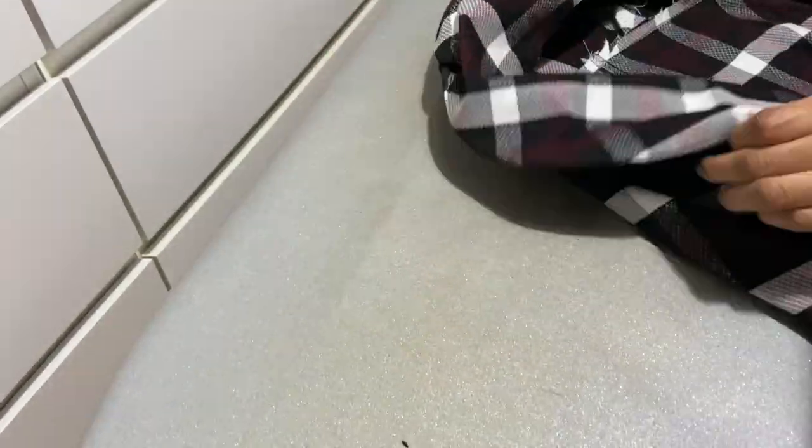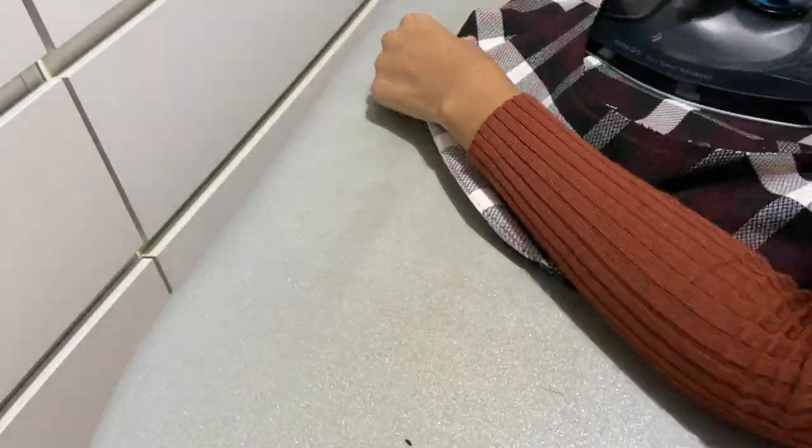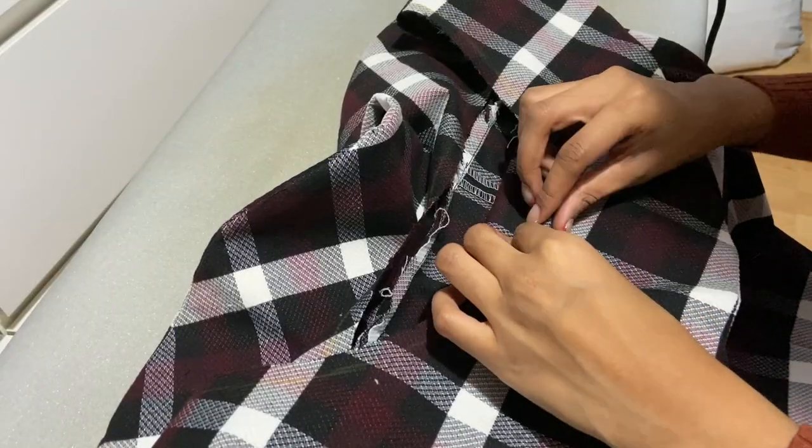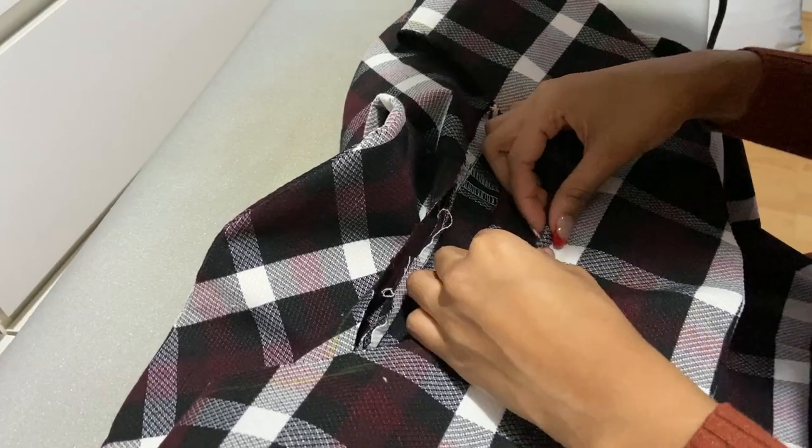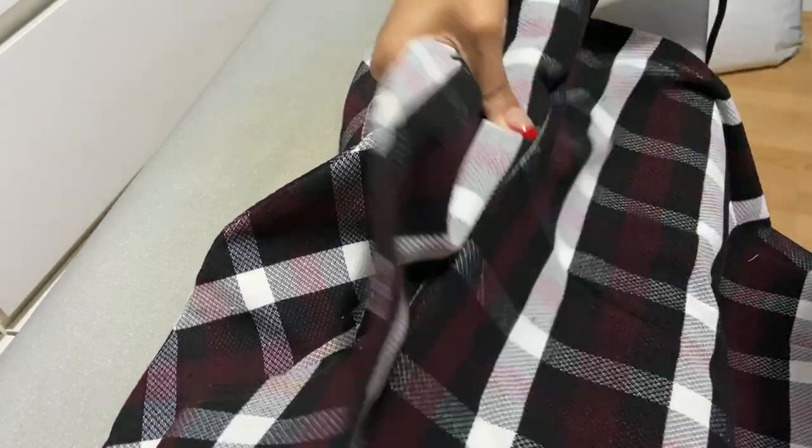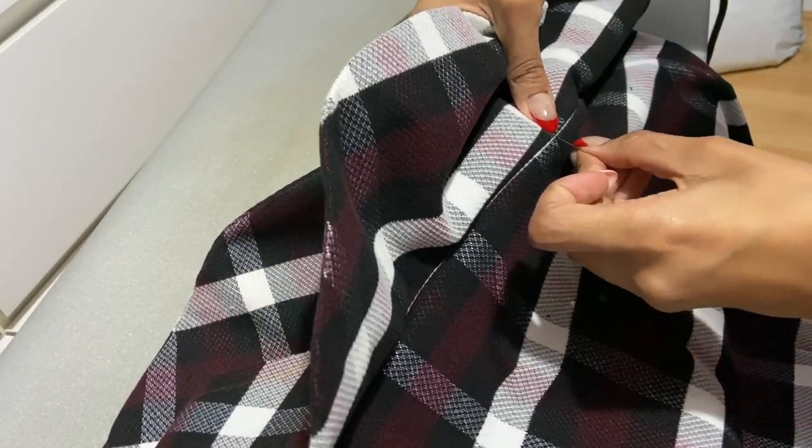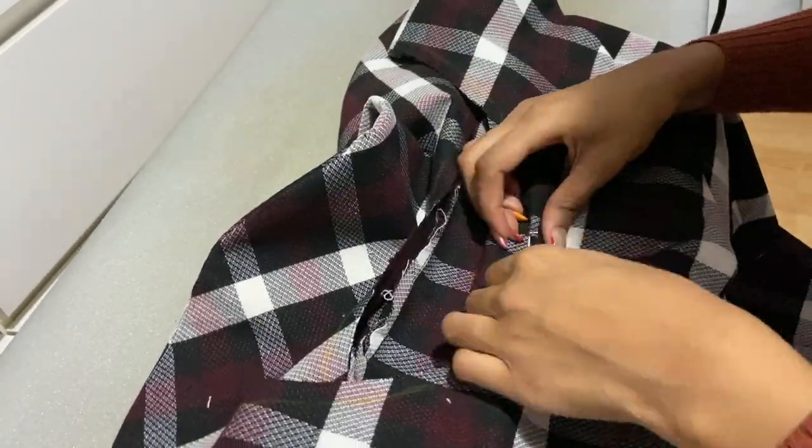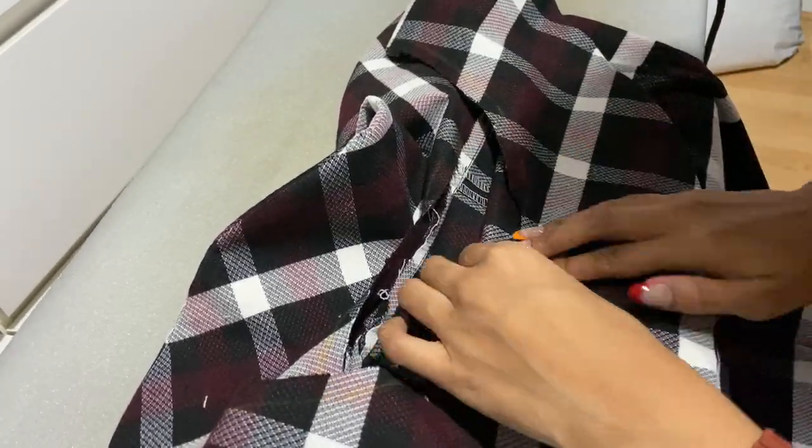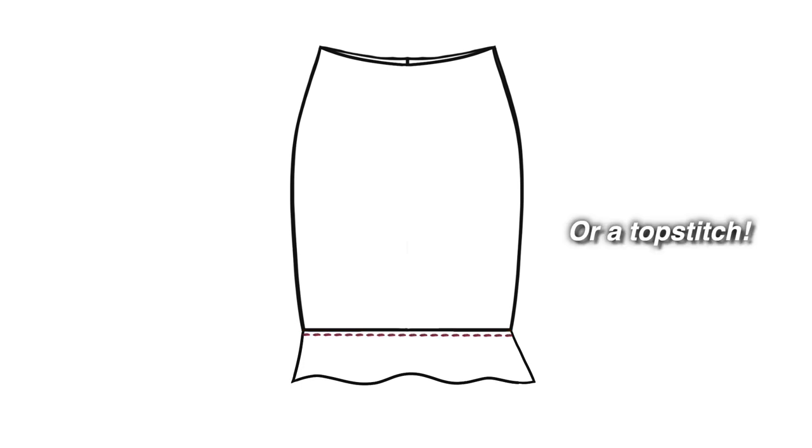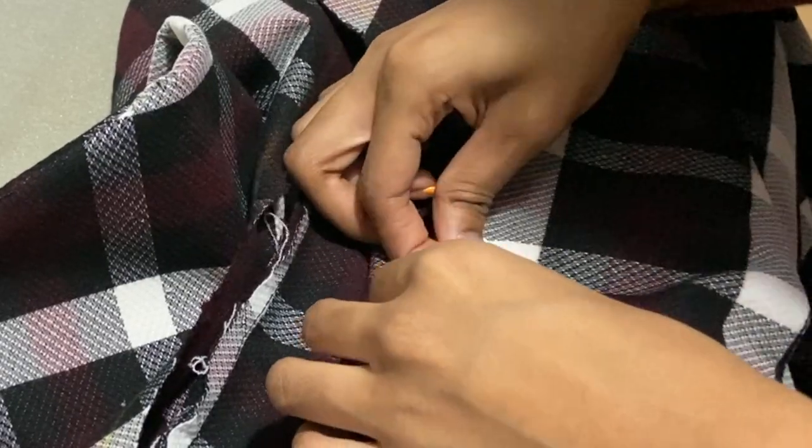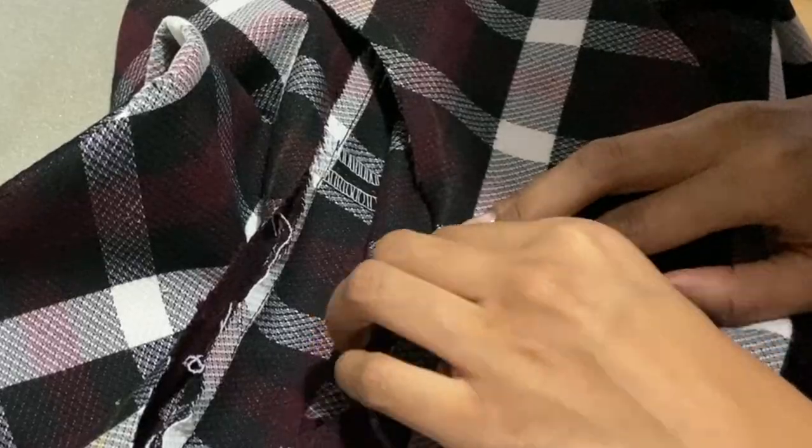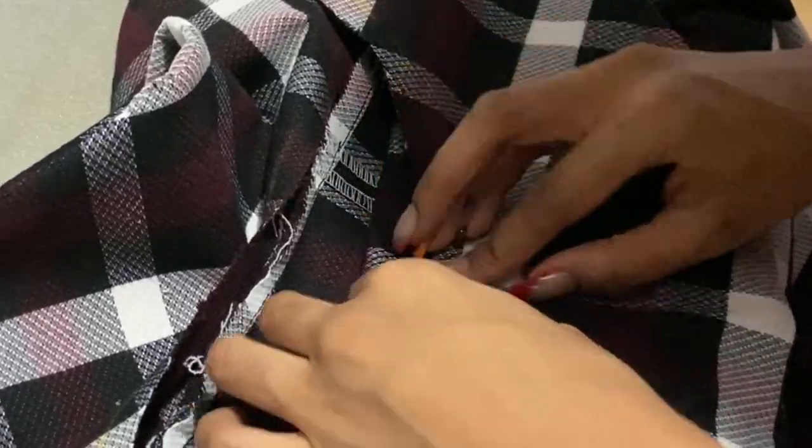Once that was done, I snipped the seam allowance to release the tension and press the seam allowance inwards towards the hem edge. Now we can work on finishing the inside. There's different ways you can go about doing this. There's the lazy man version and there's a professional version. The lazy man version is just to overlock the edge, pin it flat to the inside of the skirt, and then do a stitch in the ditch. But because I want this garment to have a flawless finish